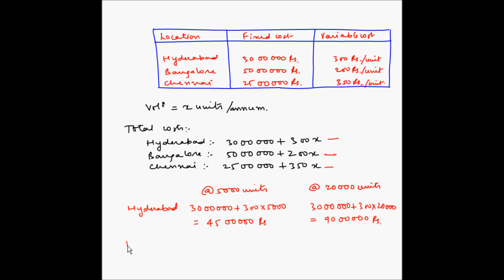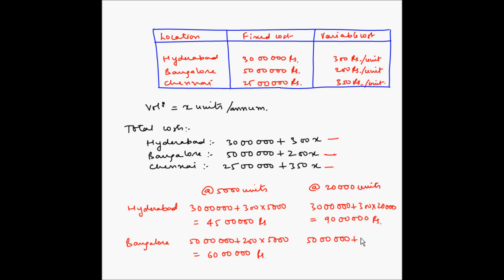Next, for Bangalore: at 5,000 units, 50 lakhs plus 200 multiplied by 5,000 equals 60 lakhs. At 20,000 units, 50 lakhs plus 200 multiplied by 20,000 equals 90 lakhs.